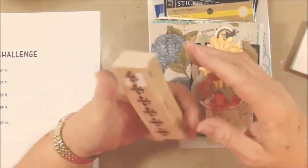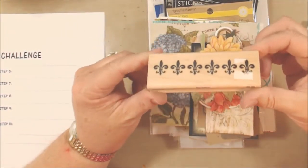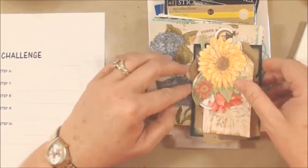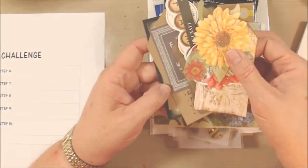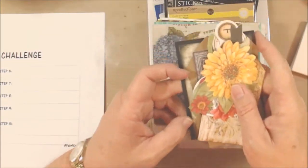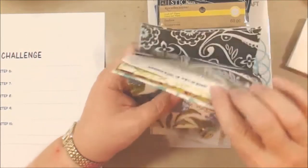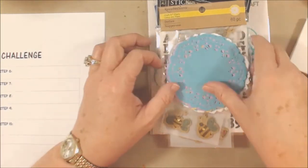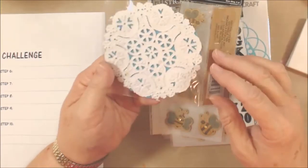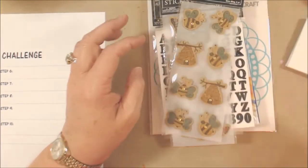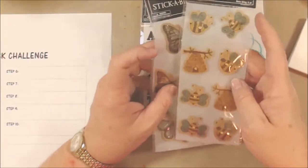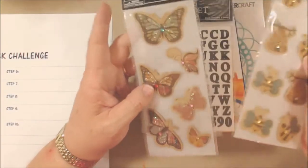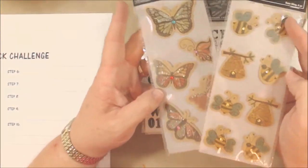This fun fleur-de-lis stamp, I have assorted little ephemera pieces here, an assortment of napkins from my stash. We have a fun little package of multicolored doilies, some super cute bumblebee and butterfly stickers that I found.